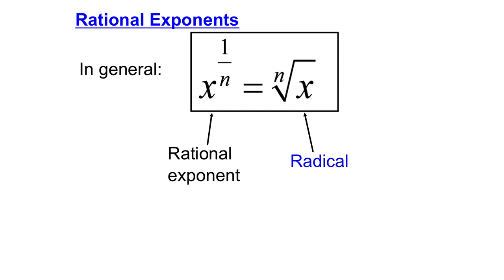So, that leads me to this general rule for rational exponents. Any base with a rational exponent can be rewritten as a radical. n is a symbol for what type of root you're taking — either square root, cube root, fourth root, fifth root, etc. The number in the radical is the same as the denominator of the fraction in your exponent. So, you can rewrite a rational exponent as a radical, which is just written as a type of root: a square root, a cube root, etc.